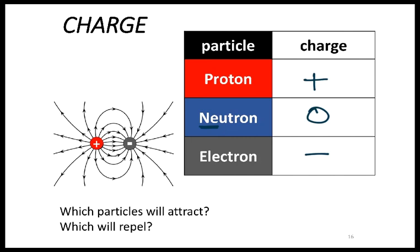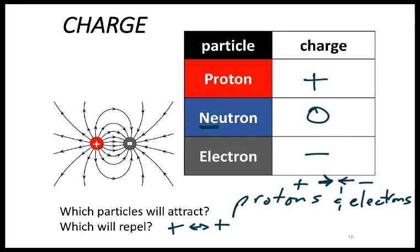So which particles are going to attract one another? Well, protons, which are positive, and electrons, which are negative, are going to attract one another. Which will repel one another? Well, protons are going to push away from other protons. Use arrows here to show that attraction. And electrons are going to push away from other electrons. This idea of electrostatic attraction and repulsion is going to help us explain the structure of the atom.